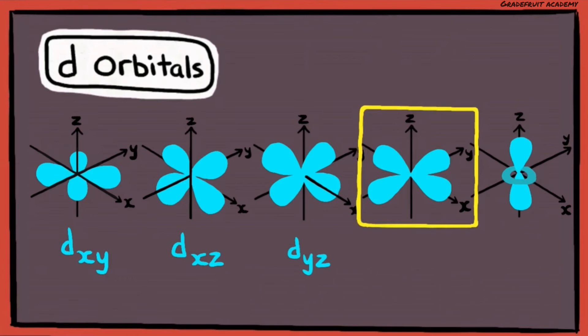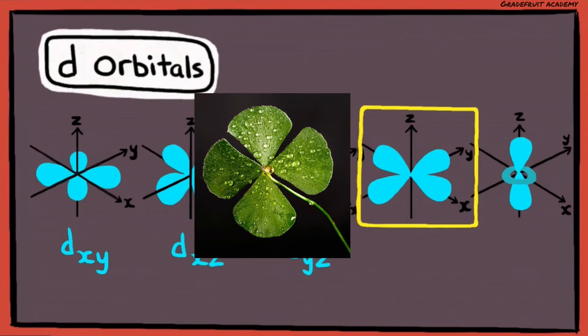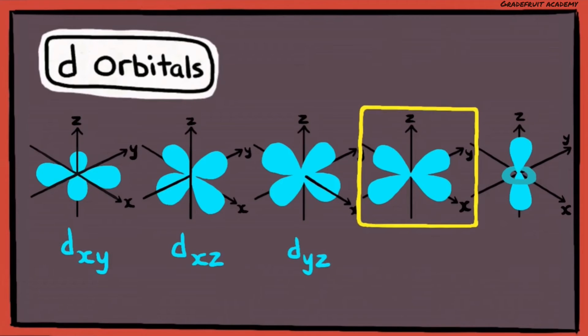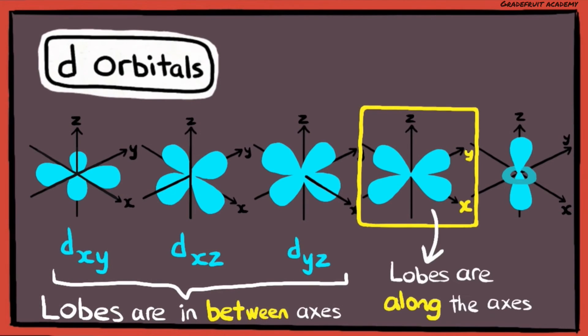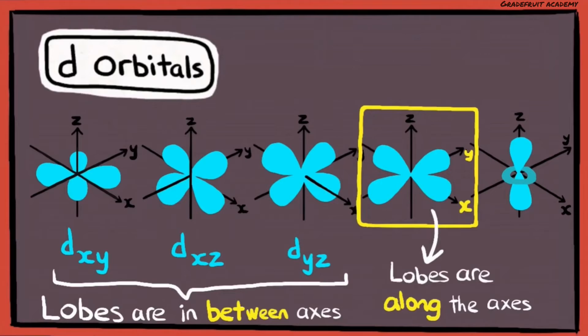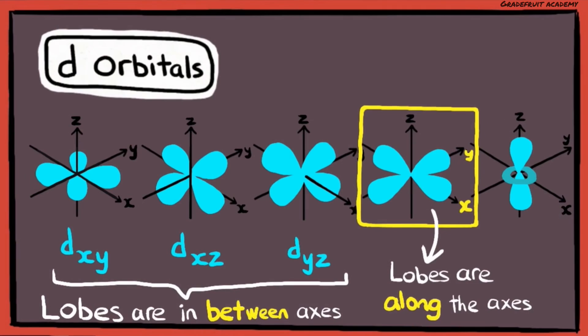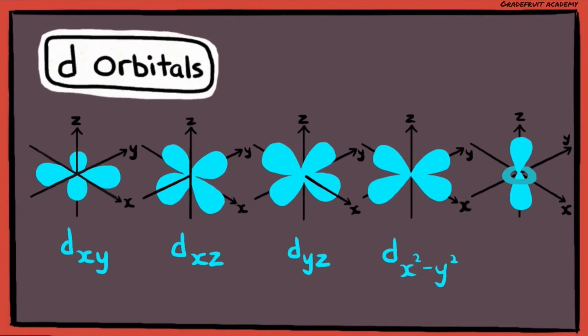The next D orbital looks pretty similar to the previous 3 orbitals, as it also has this 4-leaf clover-like shape. But can you spot the difference? The difference is that instead of the lobes being in between the X, Y, and Z axes, the lobes are along the X and Y axes, like a sausage on a stick. Hence, the name DX2-Y2.